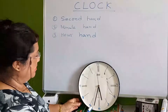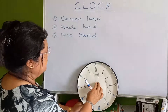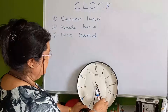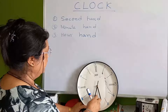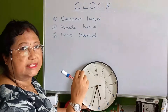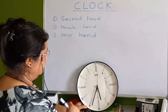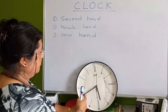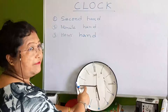Now look at this clock here. The short one is called the second hand — it moves very fast, like this, keep on moving. When it moves it makes a tick-tick-tick sound. This hand is called the second hand.